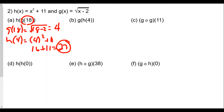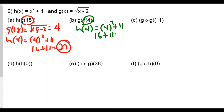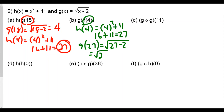Now h of 4 first, because that's the inside function. h of 4 is 4 squared plus 11, which is 16 plus 11, equal to 27. Then this value of 27 goes into g. So g of 27 equals the square root of 27 minus 2, which is the square root of 25, or 5.